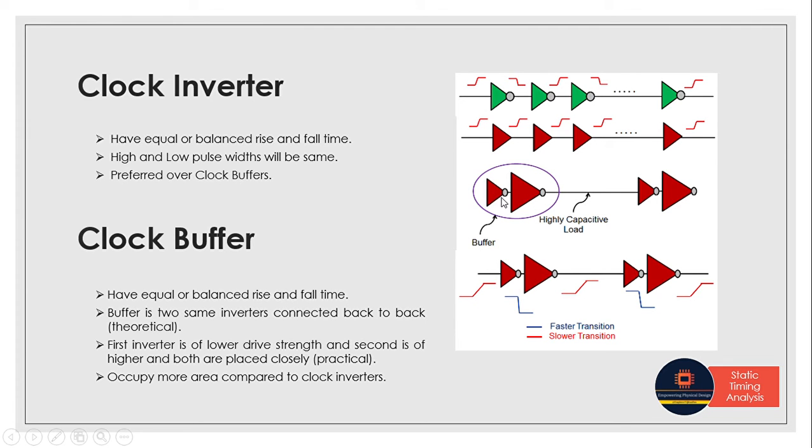We have two different drive strengths: the first inverter gets more transition, the second gets less transition. This means we don't get equal rise and fall time. If we try to make buffers with inverters, we can't achieve equal rise and fall time.